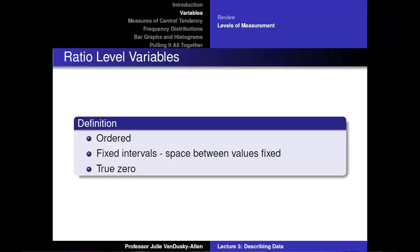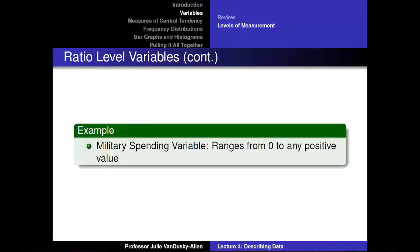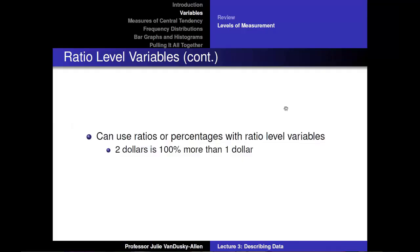Ratio-level variables are ordered, the spaces between categories are fixed, and ratio-level variables have a true zero. Military spending is a ratio-level variable — it ranges from 0 to any positive value. Because there is a true zero, we can use ratios and percentages with the data. For example, $2 of military spending is 100% more than $1 of military spending.